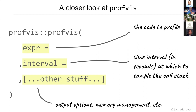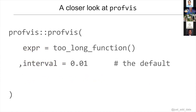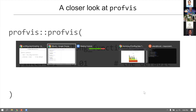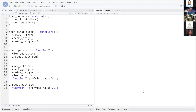I'd encourage you to go to the profvis documentation to see all the other options — it helps you manage what kind of output you get, how you handle memory management, things like that. The time interval has a default of 0.01 which is pretty reasonable, so you can usually keep that. Otherwise you're just passing a function to that expr argument.